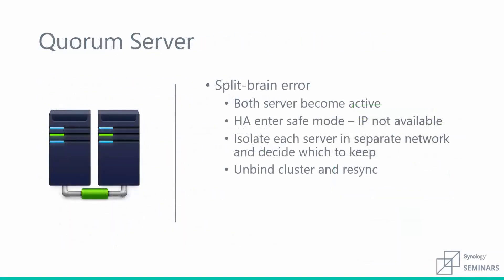One thing to point out is that sometimes a split-brain error can occur. A split-brain error is basically the two servers becoming disassociated and both thinking they're the active server, which can cause problems like multiple different instances of the same data. An easy way to fix this is to disconnect all cables, which will automatically put both units into safe mode. Safe mode blocks the external IP address and the IPs of both the active and passive server, taking everything offline. Once both units are in safe mode, you can directly connect your computer to one of the servers, log in, and determine which server has the correct version of your data. From there, you can unbind the two devices and recreate the cluster, re-syncing the two devices.